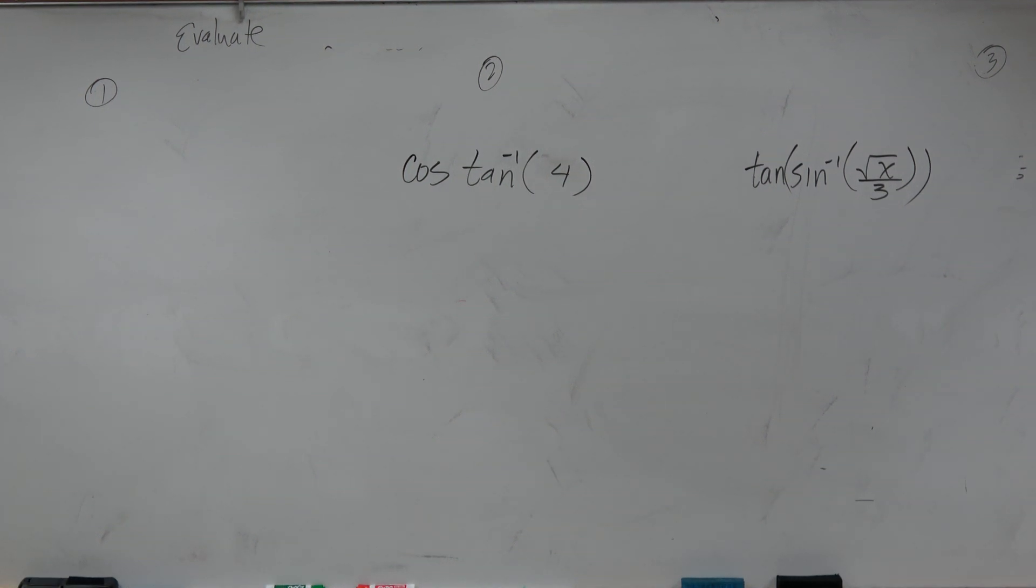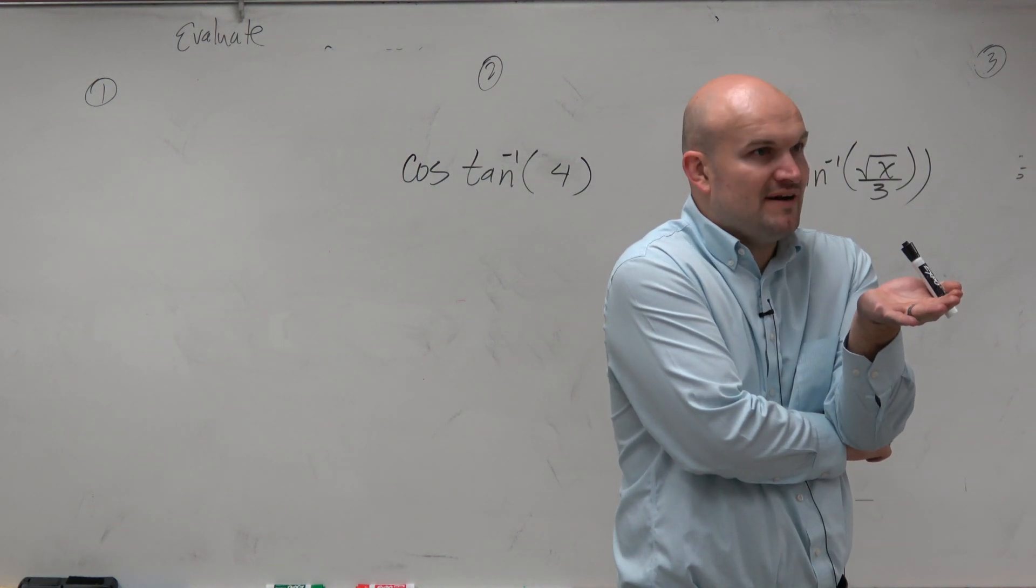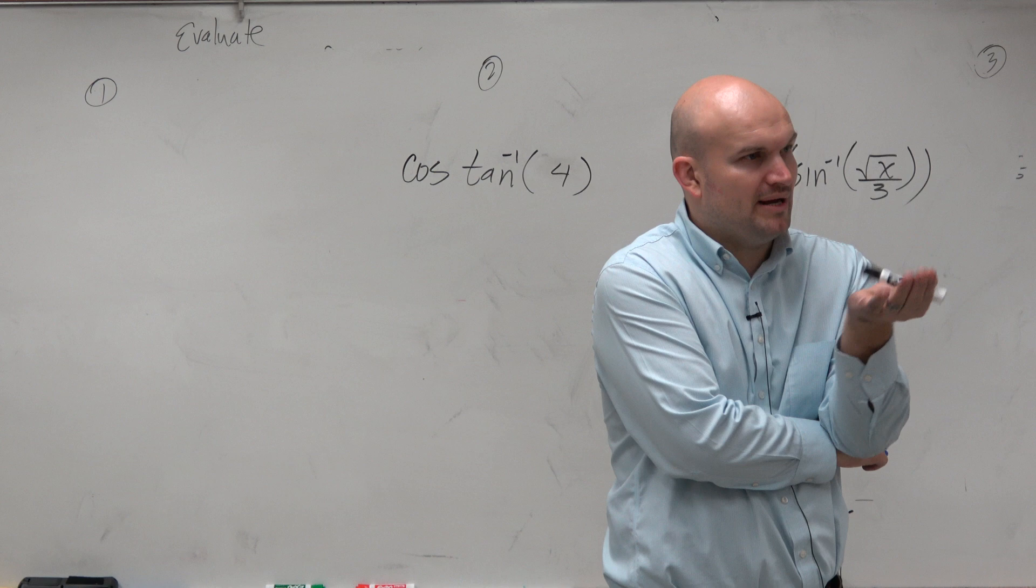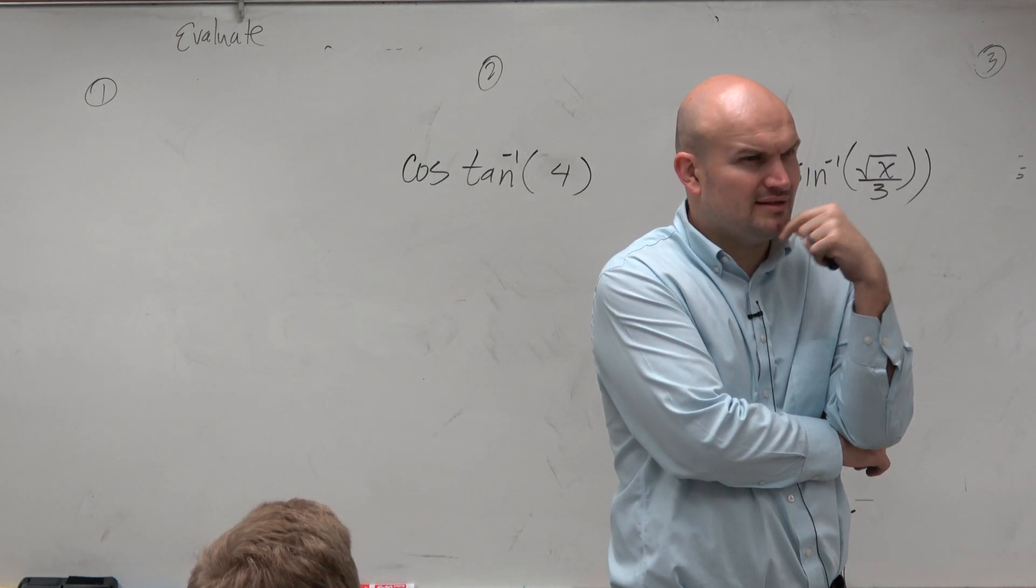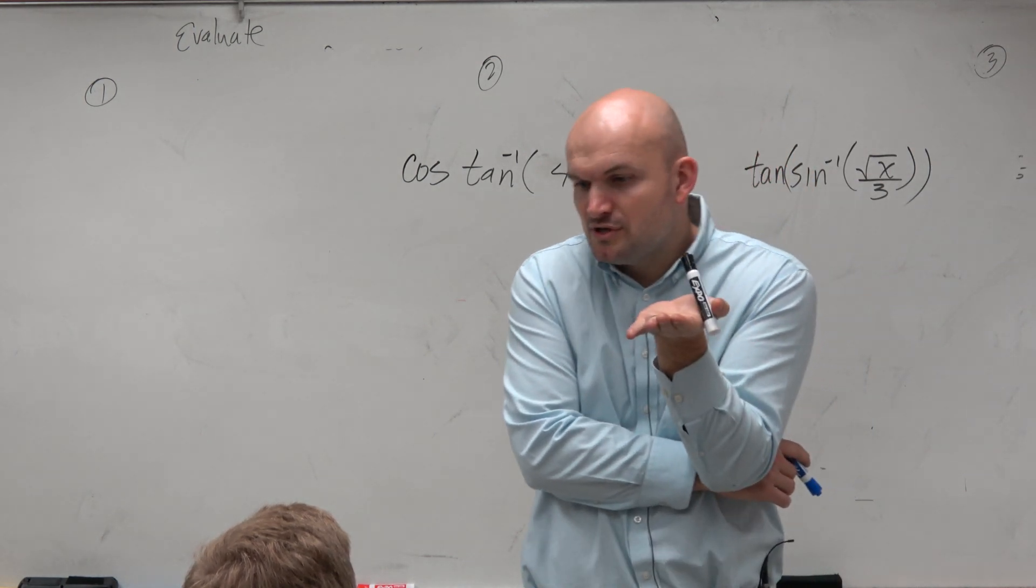You need to figure out what to do here. So now we look at this and we say, all right, the tangent inverse of 4. And we just think, well, we just spent the last class period finding all the angles that found points on the unit circle. But I don't remember coming across 4. Tangent doesn't equal 4. I'm not familiar with that for the unit circle. So then we think, well, we can't use the unit circle, so what do we do?